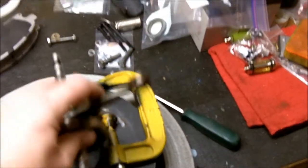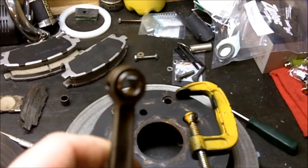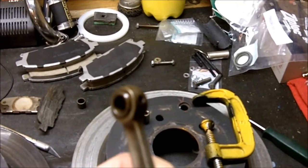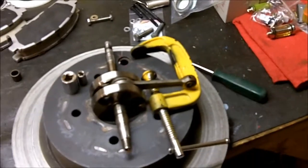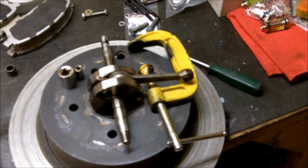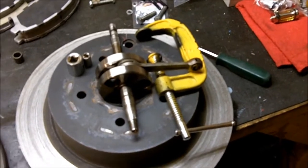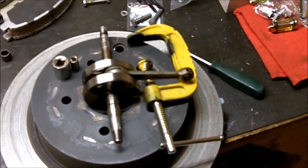Here's a Tomos A3 crank. You can see there is a bushing in here. The A3 takes a 10mm wrist pin on its piston. The A35 Puch is 12.